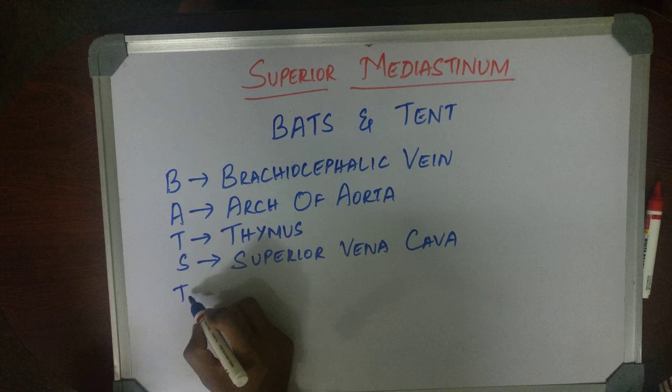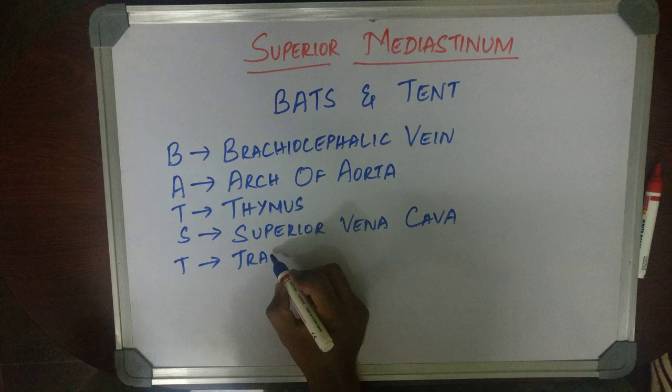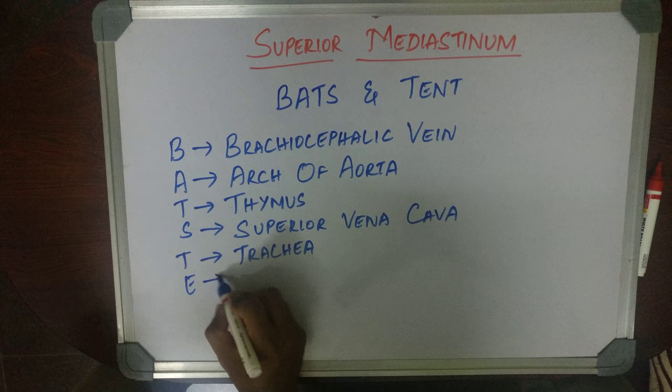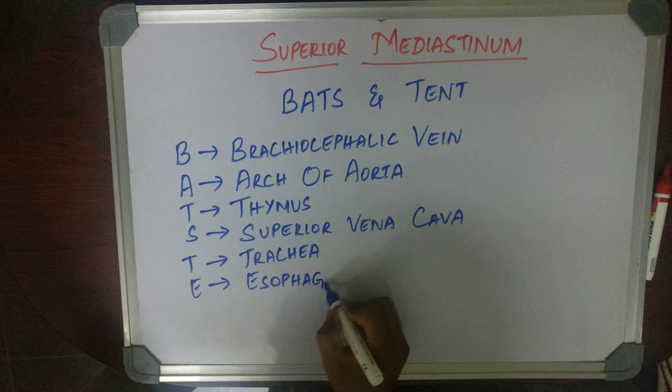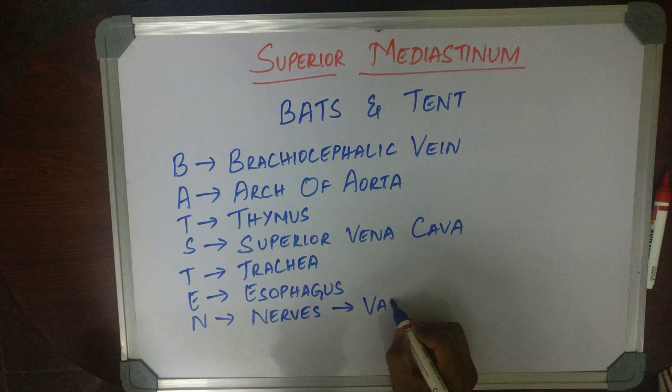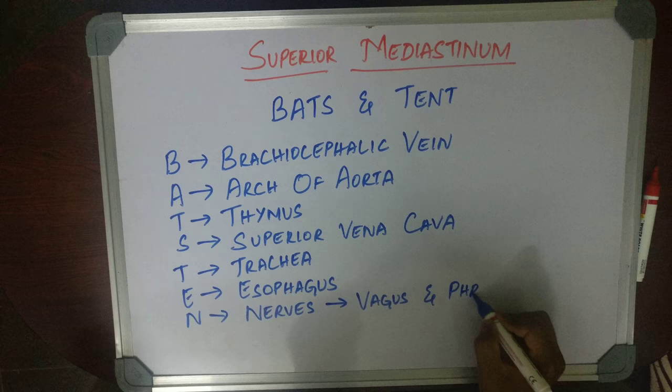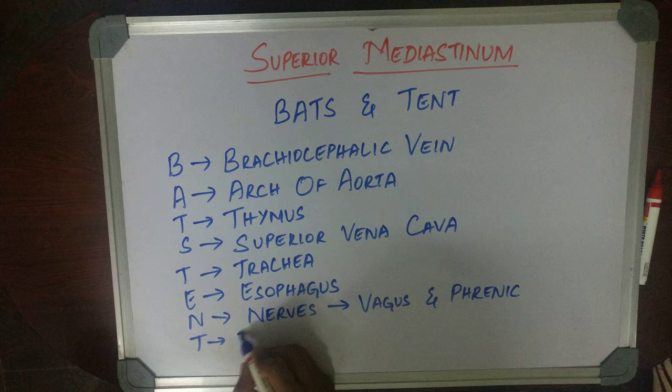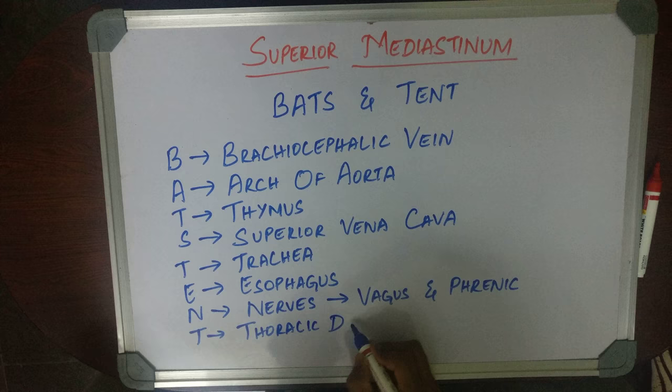Now for TENT: T is Trachea. E is Vagus and Phrenic Nerves. N — and the last T is Thoracic Duct.